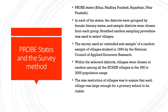This subsample from the NCAER village study already shows some degree of robustness, because the National Council of Applied Economic Research follows robust methodology for its village surveys. The PROBE team chose villages mostly in the range of 300 to 3,000 population. This size restriction was done to ensure that each village was large enough for a primary school to be viable, since the PROBE team wanted to focus on elementary education — up to class 8.